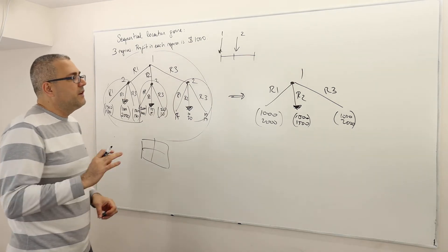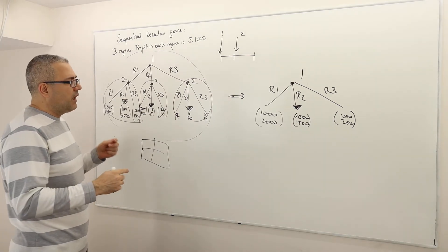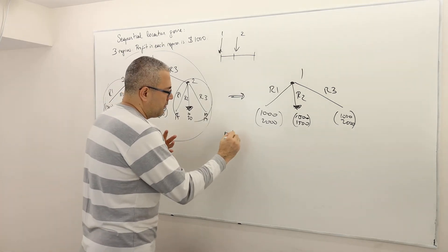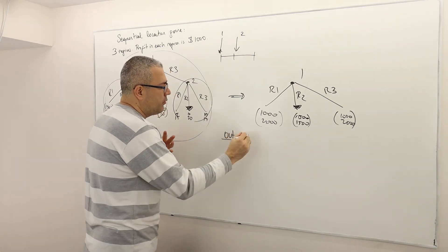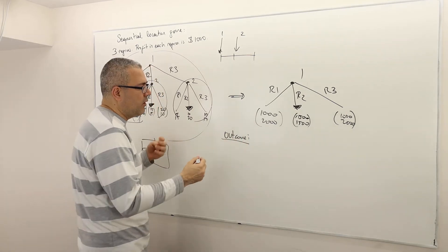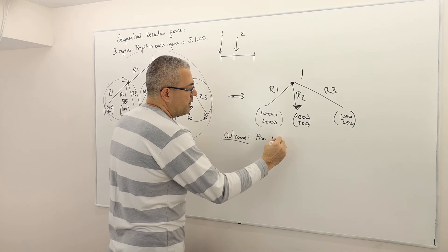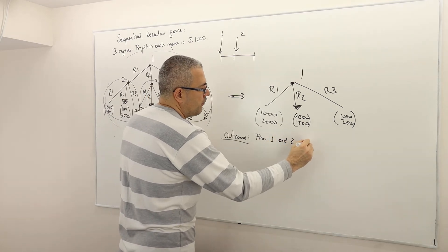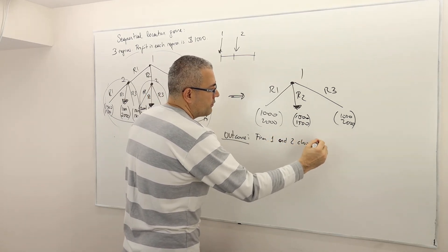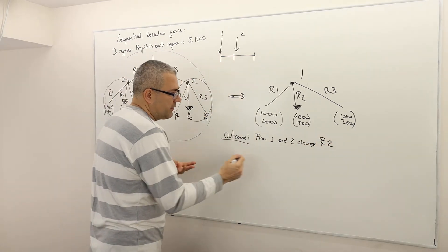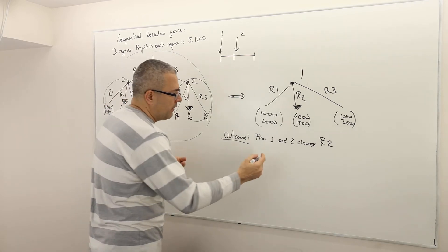So what does that mean then in this particular game? This is the outcome. There are two ways you can describe the outcome. One is firm one and two, both choose R2, region two, okay?